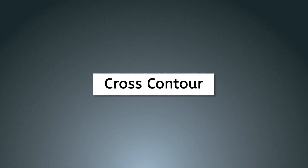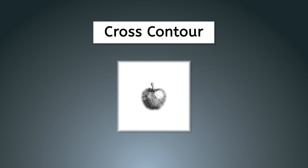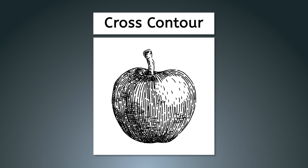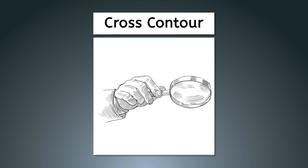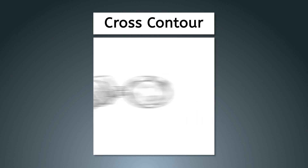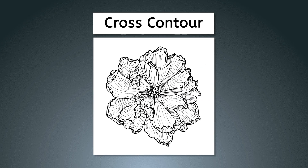Cross contour line drawings are more complex than contour lines. Cross contour lines visually flow over the three-dimensional form of the subject. Sometimes the lines flow in a single direction; other times the lines can intersect. The overall effect becomes like a topographic map of an object, showing the planes of its surface.